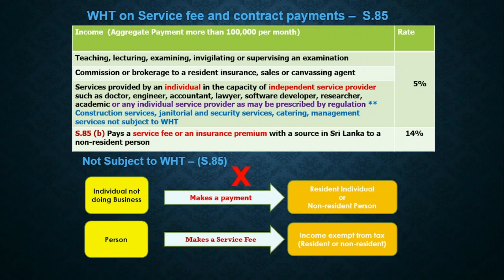There are three items. The first one is teaching, lecturing, examination, invigilating, or supervising an examination. The second one is commission or brokerage to a resident insurance, sales, or canvassing agent. The third one is services provided by an individual in the capacity of an independent service provider such as a doctor, engineer, accountant, lawyer, software developer, researcher, or academic. If you are making payments to a resident individual for these three types of services, you have to deduct 5% withholding tax if the payment exceeds Rs. 100,000 for a calendar month.